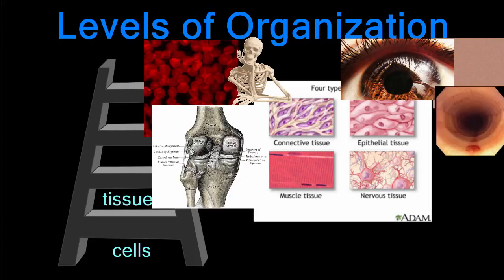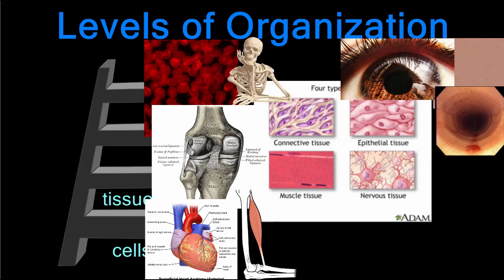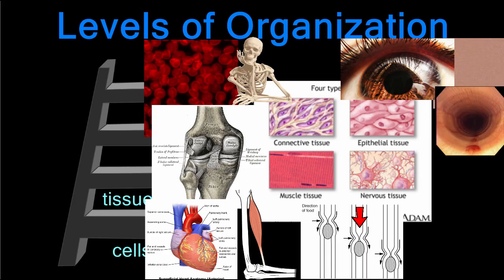Epithelial tissue is found wherever your body has contact with the outside world. For example, skin, the cornea or clear covering over your eye, and the lining of your digestive and respiratory systems are all epithelial tissue.